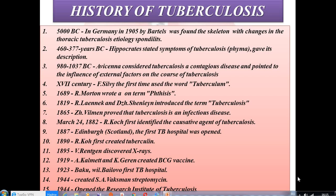Studies of human skeletons show that TB has affected humans for thousands of years. Ancient documents written by people go back 500 years before our century. In Germany in 1905, by Bartos, a skeleton with TB lesions of the spine was found, and traces of TB spine lesions have even been found in the skeletons of Egypt.